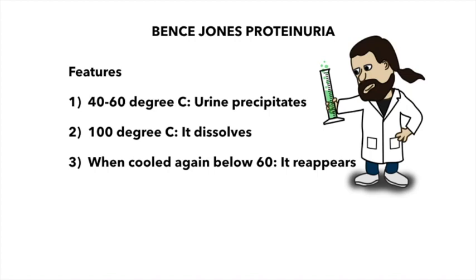The other test performed on urine is to detect Bence Jones proteins, which are immunoglobulin light chains — different from albumin. The special features of Bence Jones protein are that on heating the urine to between 40–60°C, precipitation of the protein occurs. Had it been albumin, precipitation would form at temperatures above 60°C. On further heating the urine to 100°C, the precipitation dissolves, and when cooled again below 60°C, the precipitation reappears, proving that the patient has Bence Jones proteinuria.